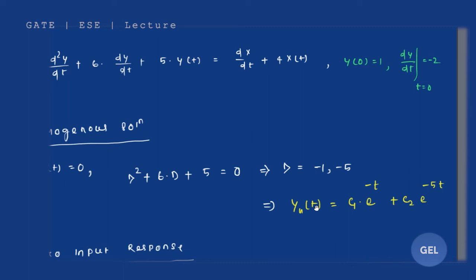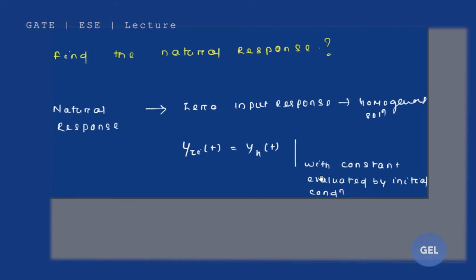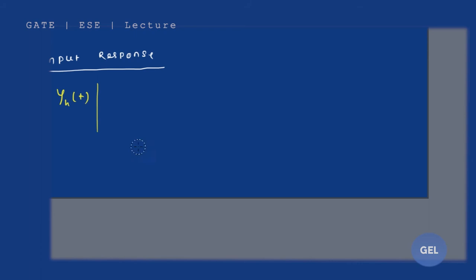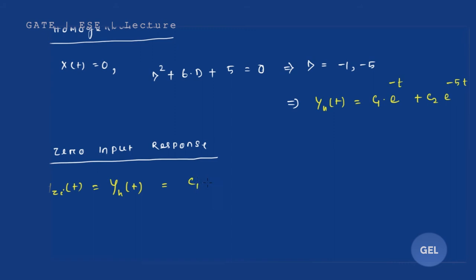We have obtained the homogeneous solution. Now, how to get the zero input response — that is the natural response: y_zi(t) = y_h(t), but with the constants evaluated by the initial conditions. So we need to find c1 and c2 using the given initial conditions. Let's see how this is done.